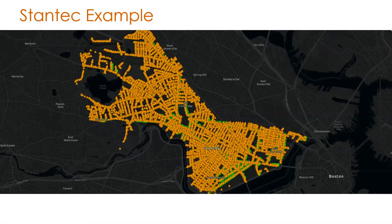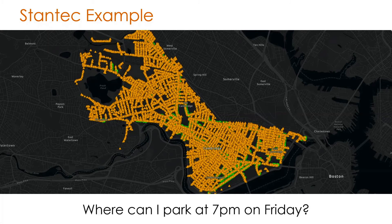At Stantec, we collected asset GIS data for a municipal client. This included signpost locations, parking meter locations, and street sign information. We then decided to take the project a step further to see if we could answer questions that a city manager or resident might ask, like: where can I park at a given time on a given day?